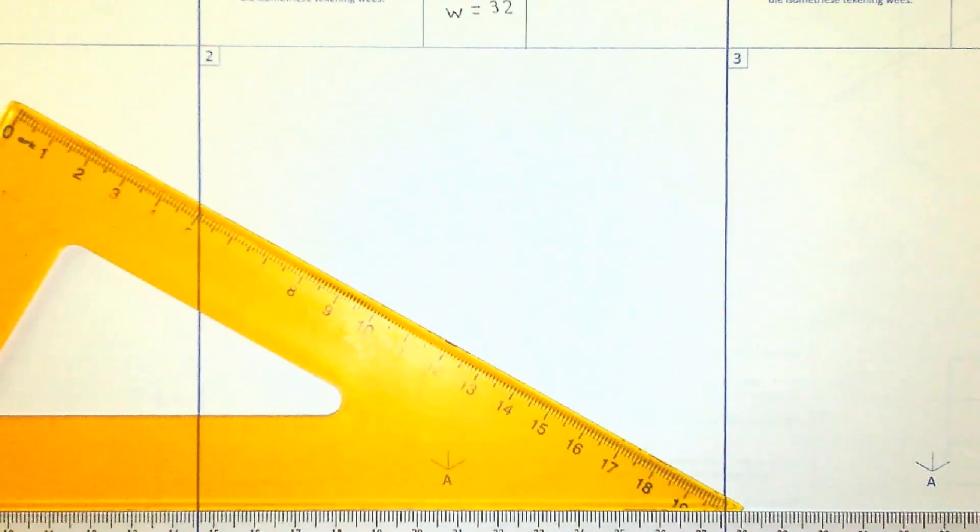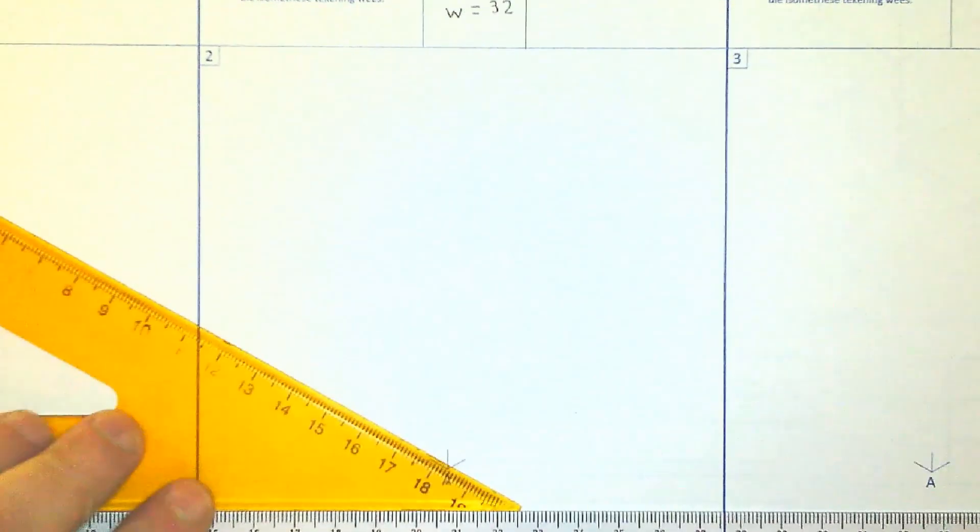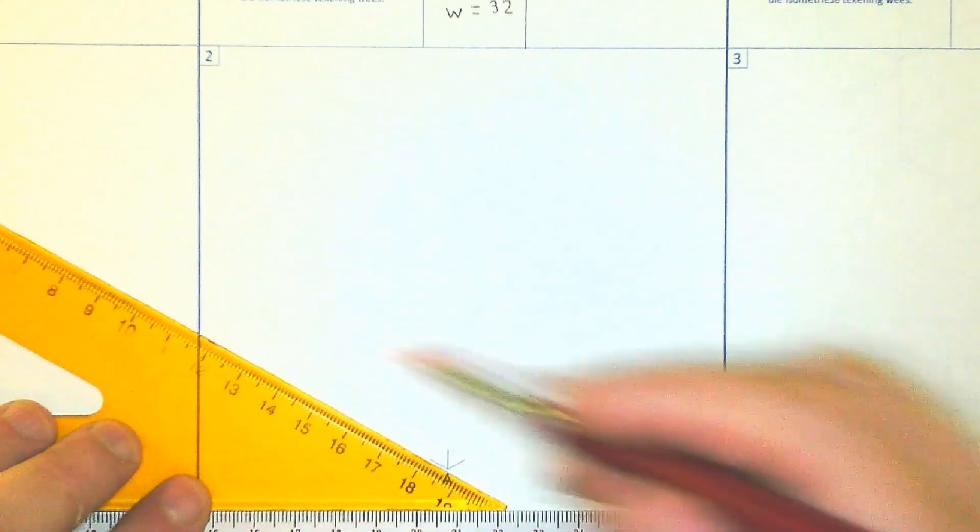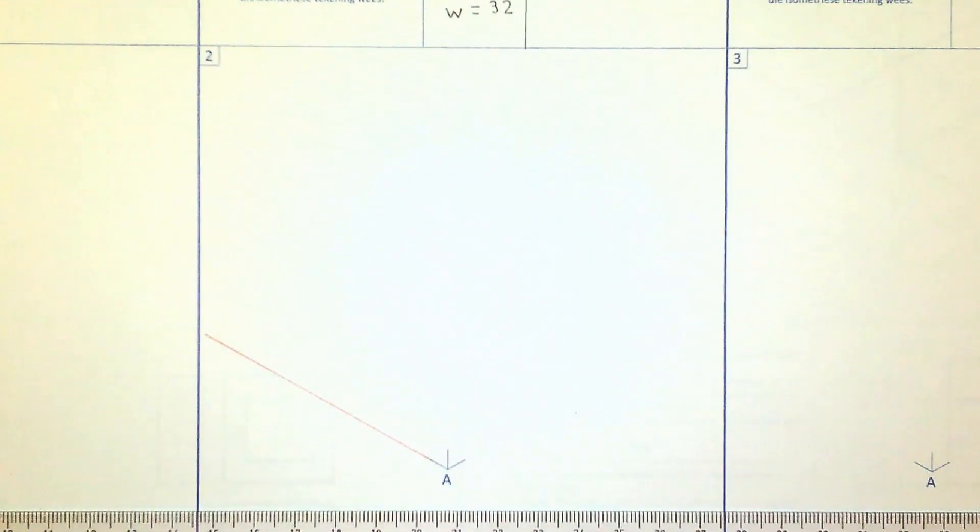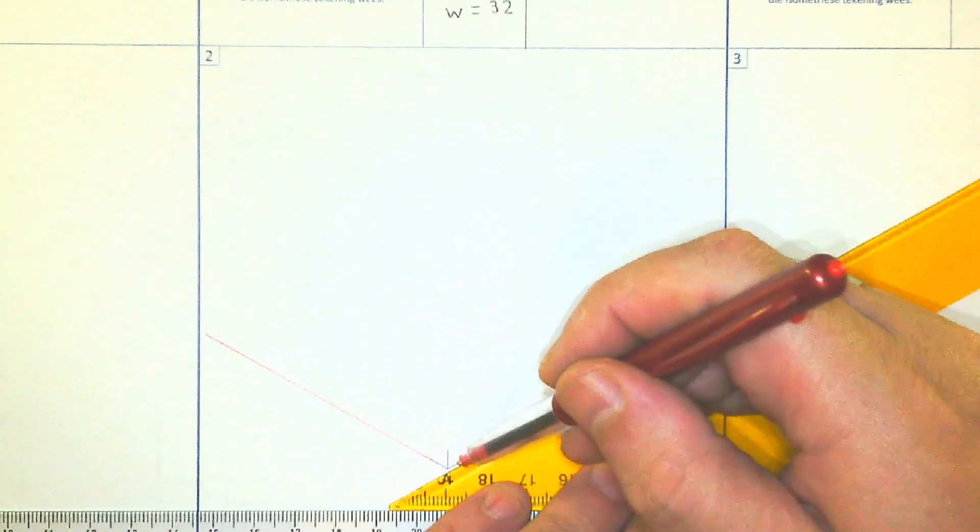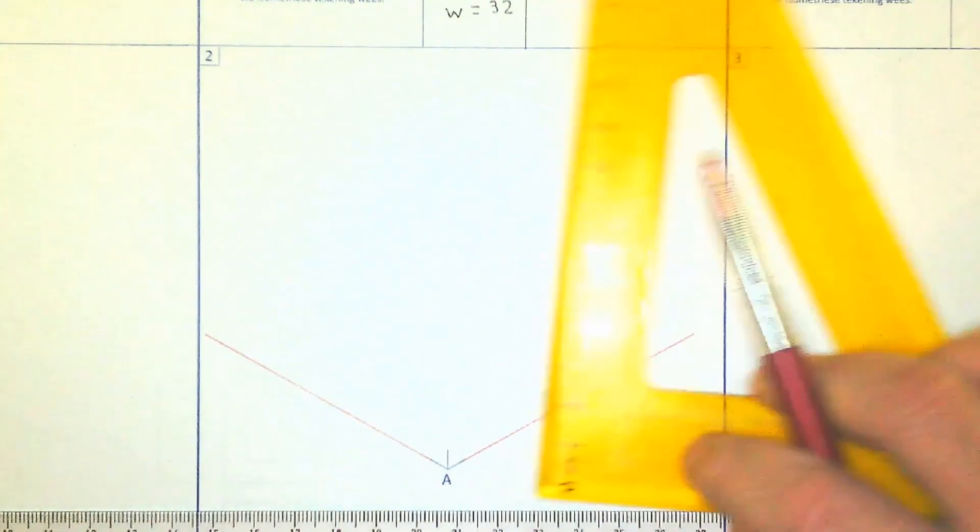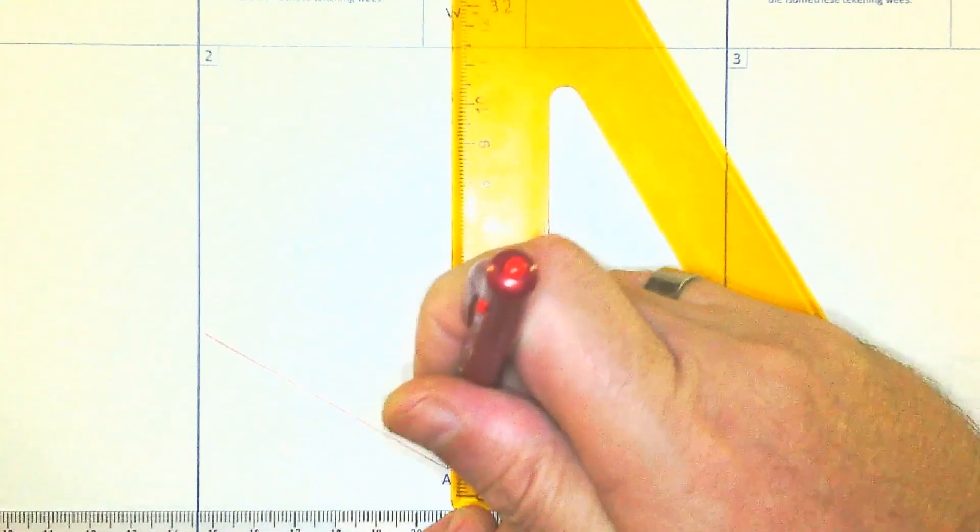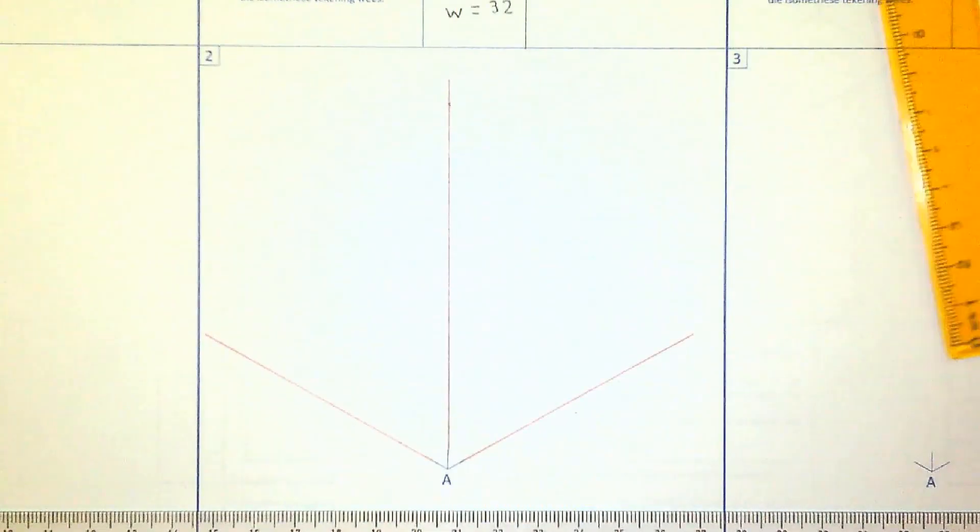So to start, we are going to draw a full block for the entire isometric. Before we draw the detail, we first want the box that it is going to fit into. So I am going to start on A and just draw a 30-degree construction line both ways. And then we are going to add our vertical.